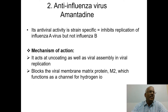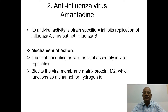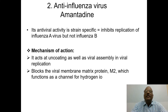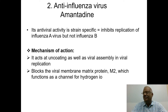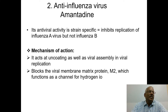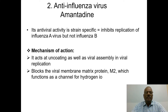Next, anti-influenza virus drugs. Amantidine is a strain-specific drug, meaning it inhibits replication of the influenza A virus but is not effective against the influenza B virus. The mechanism involves uncoating — that is, blocking the release of genome into the host cell for incorporation. The second mechanism is inhibition of assembly and budding.